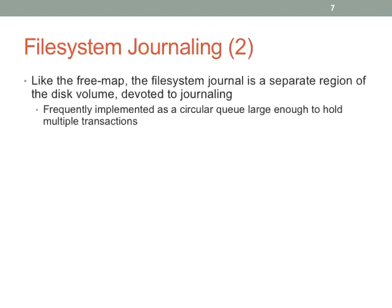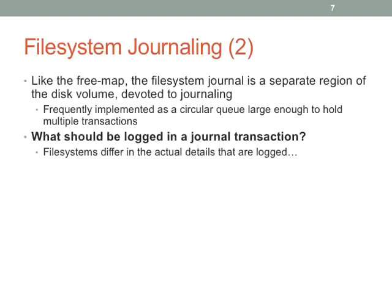The file system journal typically occupies a specific region of the drive set aside for journaling tasks, and it's typically a circular queue with a head and a tail. When you log, you put stuff on the tail; as things are completed, you move the head forward. It's a circular queue because you expect a relatively small number of transactions — only what needs to be applied to the file system.